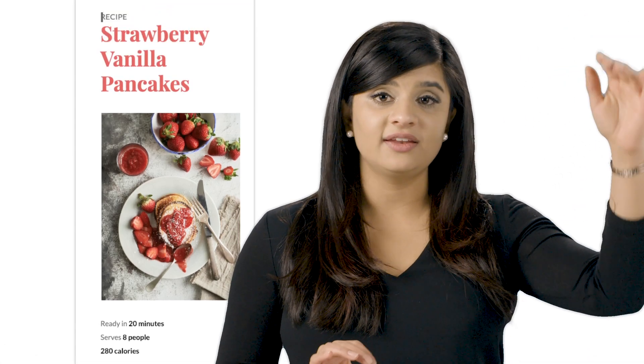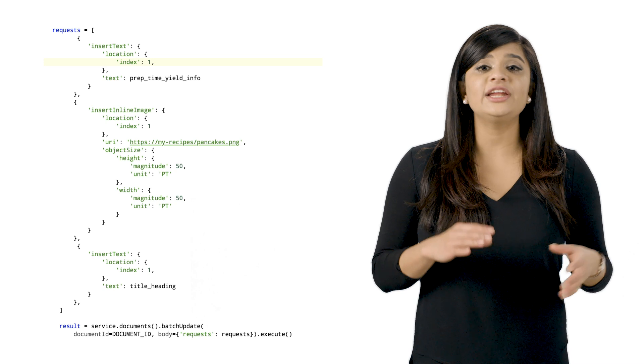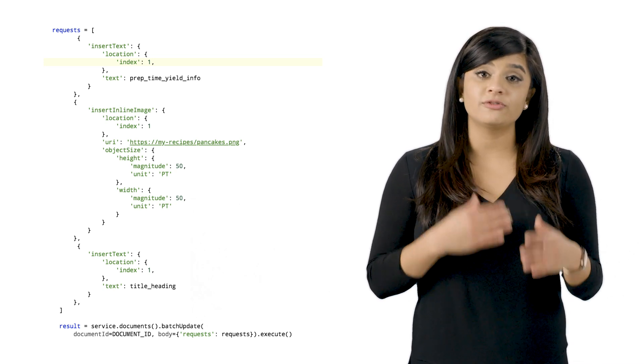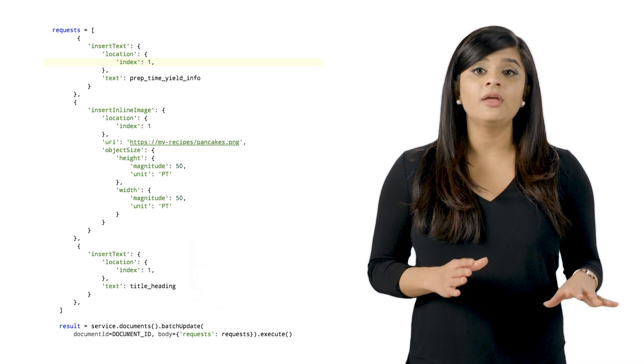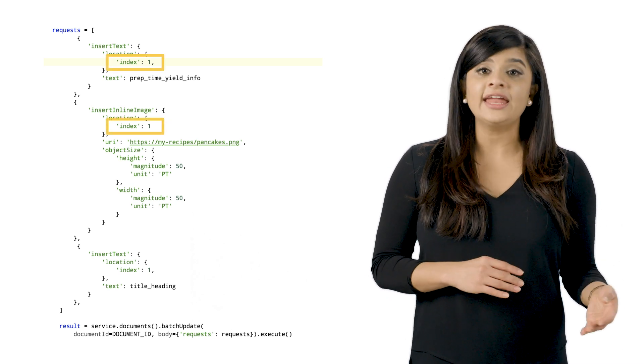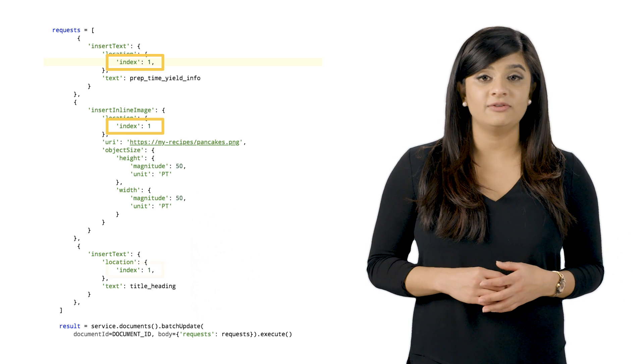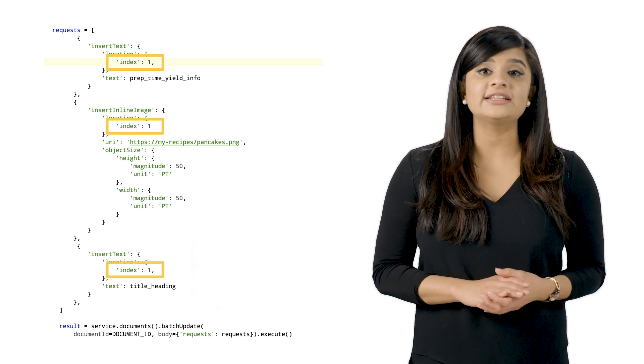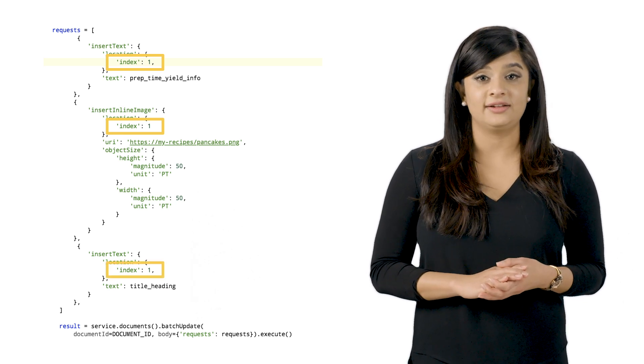So here's where our trick comes in. Since you have to set the start index for every insert, what if you started from the end and always inserted to the top of the document? Our batch update insert request will look much cleaner. I'd use a single batch update and order all of the updates in reverse — start at the bottom with insert text for prep time and yield info, then insert inline image for the recipe photo, and then finally insert text for the title and heading. It's so much simpler when everything starts at one.